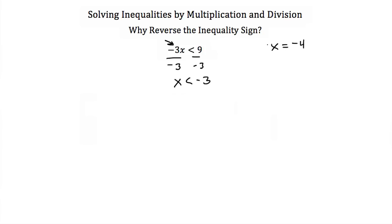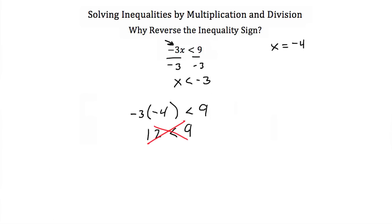Let's pick x is equal to negative 4, because negative 4 is less than negative 3, and we'll plug this back into our equation. If we do that, we'll have negative 3 times x, which is negative 4, and that has to be less than 9. Now if I multiply negative 3 times negative 4, I get a positive 12, which has to be less than 9. But 12 is not less than 9. So that is why we always switch our inequality sign when we multiply or divide by a negative number.